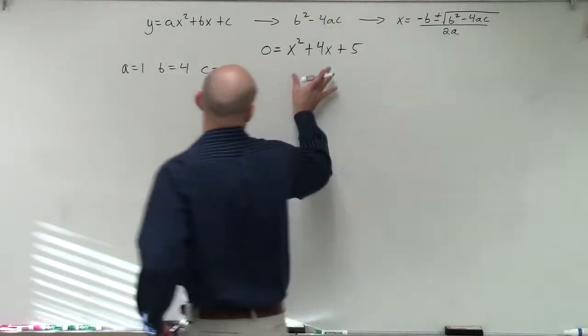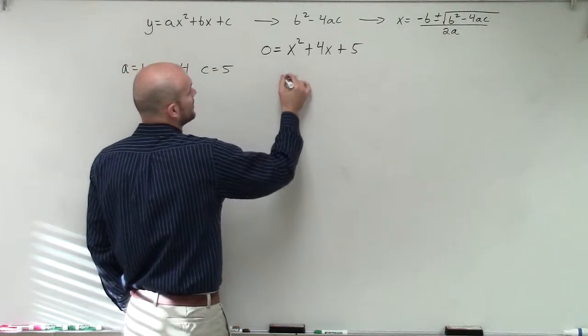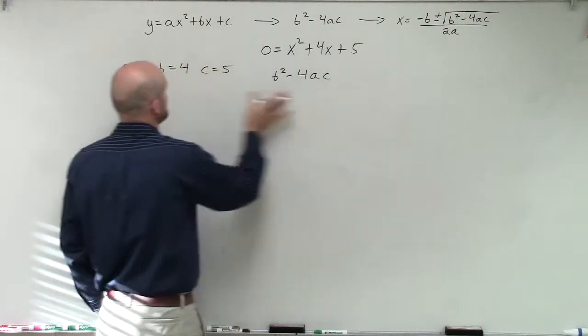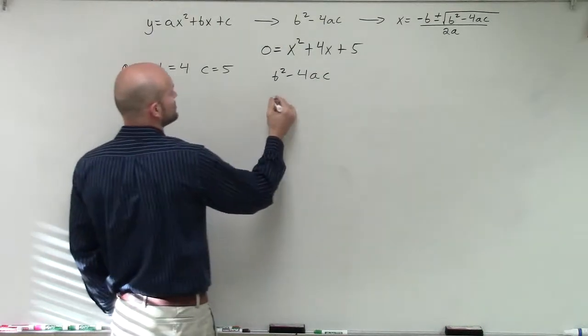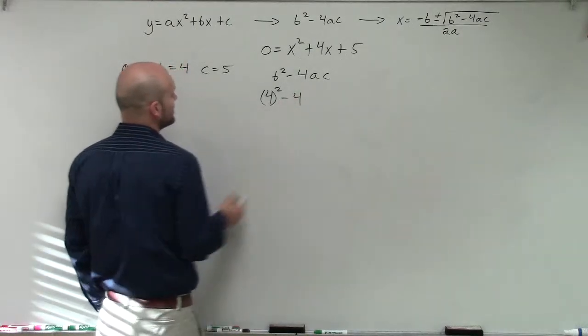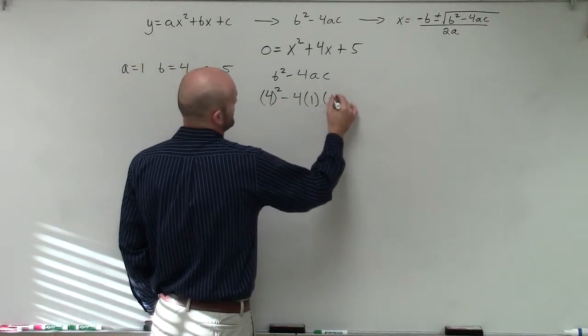The next thing is now I want to determine what the discriminant is. The discriminant is going to be b squared minus 4 times a times c. Now I'm just going to plug in my values. I'll have 4 squared, and I'll put them in parentheses just to remember that I'm plugging them in, minus 4 times a times c.